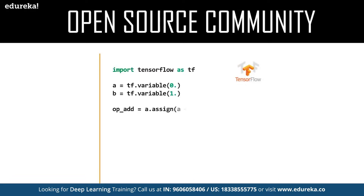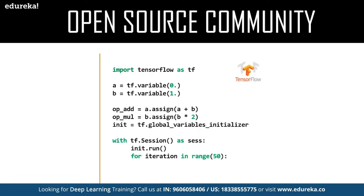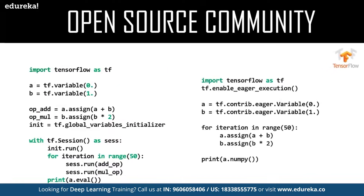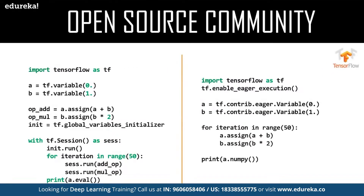A simple TensorFlow program consists of a construction phase — where you build a graph — and an execution phase, where you evaluate the graph, create a session, and initialize all variables. As shown in the geometric sequencing example, it is straightforward to execute. TensorFlow 2.0, the latest release, makes this even easier by enabling eager execution by default, which simplifies things considerably — reducing programs to just a few lines of code.